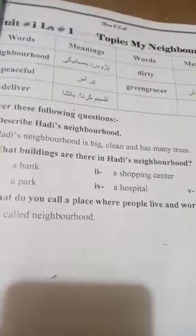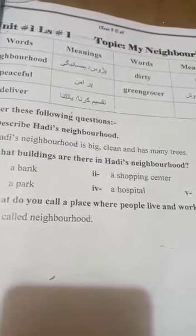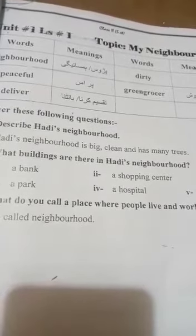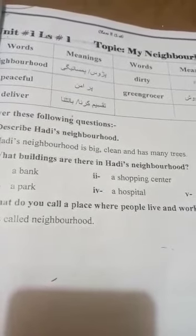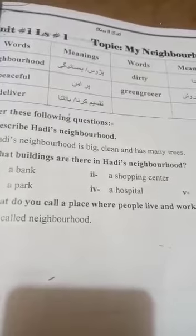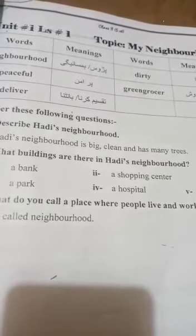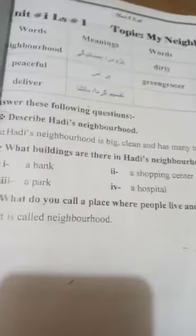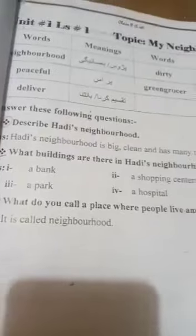What buildings are there in Haadis' neighborhood? Haadis' neighborhood mein kaun kaun si buildings hain? Agar is question ke liye bhi aap picture ko dekhein ge to bachay khud ba khud hi buildings bata dein ge. Wahaan par bank hai, park hai, a shopping center, a hospital, a school. What do you call a place where people live and work together? Its answer is: it is called a neighborhood.